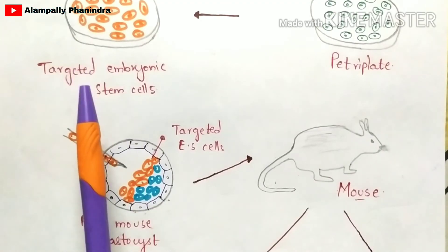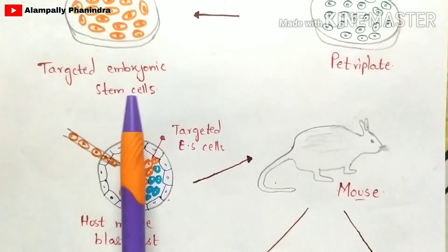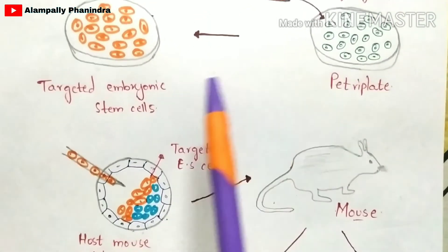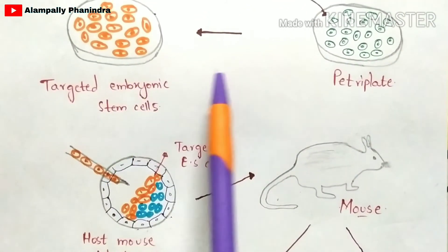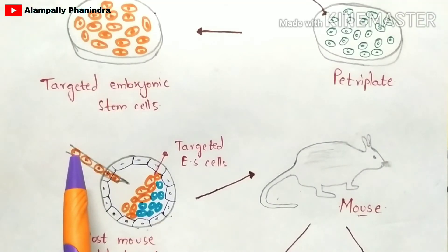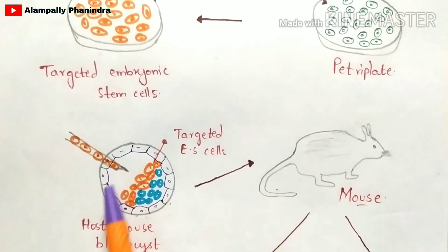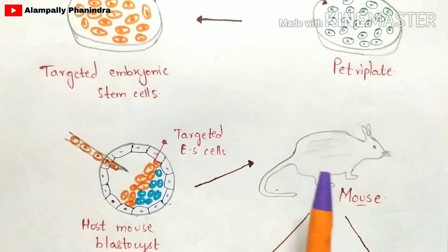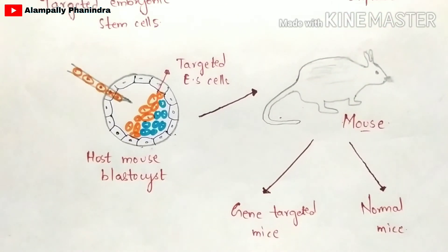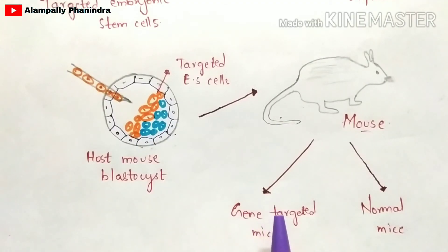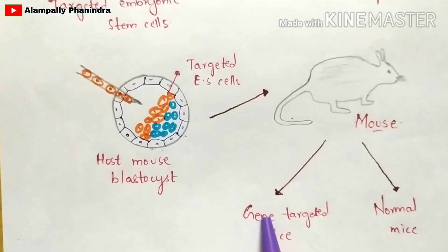The targeted embryonic stem cells cultured in the petri plate are extracted using a micro injection and injected into the host mouse blastocyst. This blastocyst is then implanted into the mouse, which undergoes the fertilization process and produces two offspring.